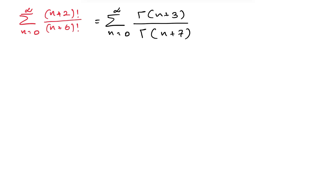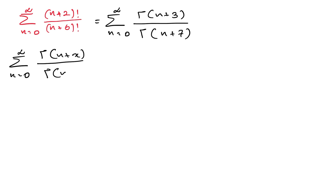Now I am going to generalize this summation. So I am going to take the sum from 0 to infinity of gamma of (n+x) over gamma of (n+y), where y is greater than 2x, n is a positive integer, and x is not equal to y.